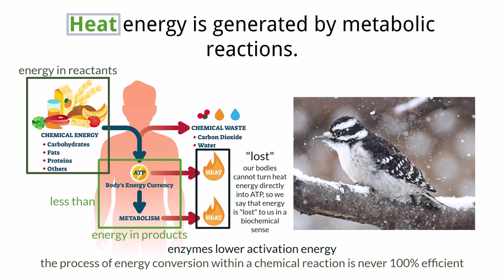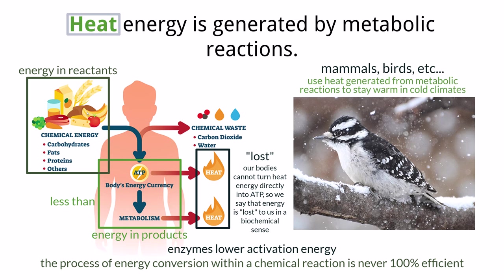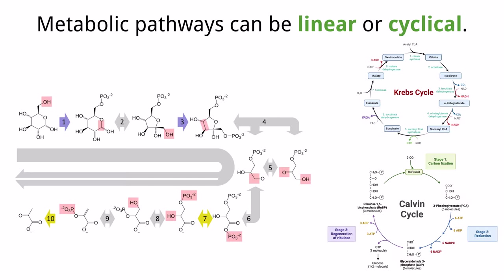Our cells can't turn heat energy into chemical energy stored in ATP, so it is lost to us in that sense. However, even though some energy is converted into heat, it does not mean it is not useful in another way. Many organisms like mammals and birds depend on this heat generation from metabolic reactions to stay warm in their environments, so even though we can't turn it back into chemical energy, it can help sustain life for organisms in colder climates.